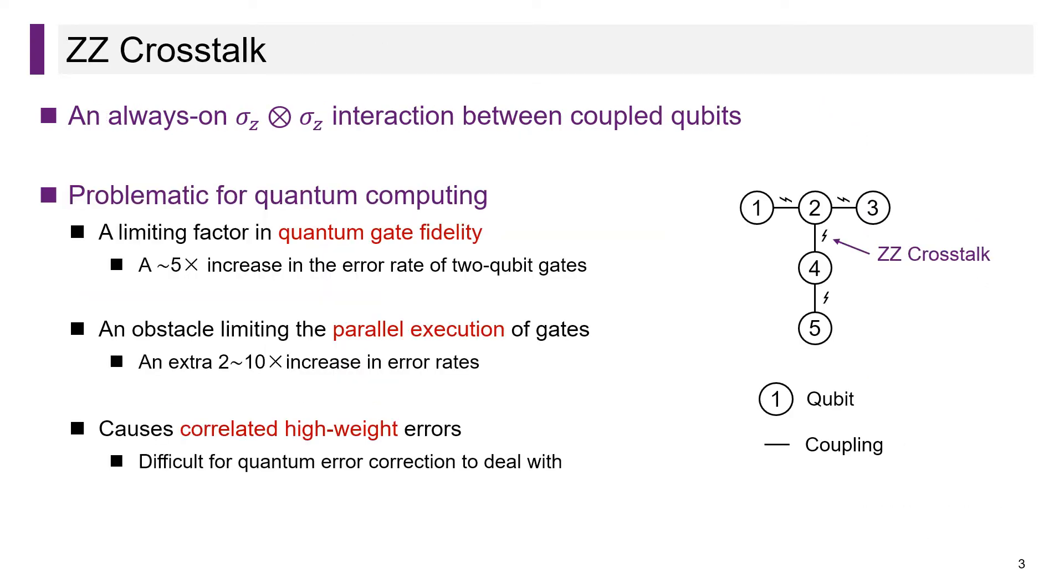Currently, superconducting qubits suffer from a destructive type of noise called ZZ crosstalk. It refers to an always-on sigma-Z tensor sigma-Z interaction between coupled qubits.